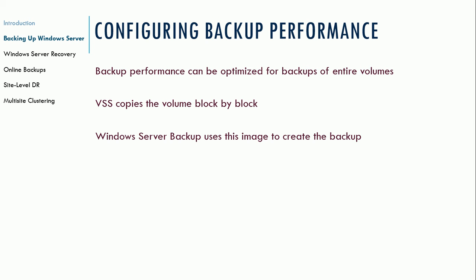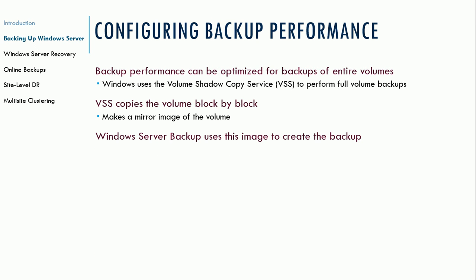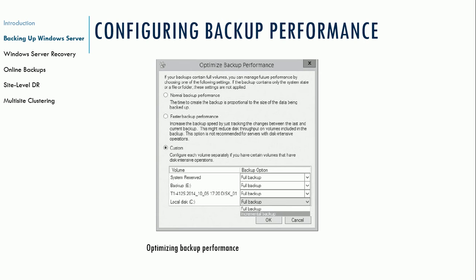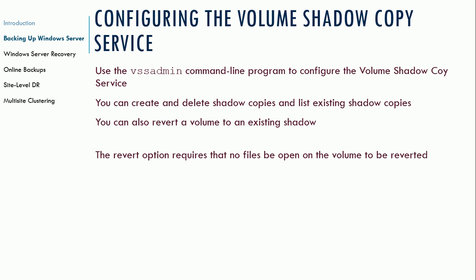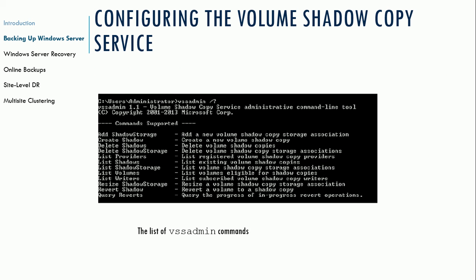Backup performance can be optimized for backups of entire volumes. Windows uses the Volume Shadow Copy Service (VSS) to perform full volume backups — VSS copies the volume block by block and makes a mirror image. It's a block-level copy as opposed to a file-level copy. Windows Server Backup uses this image to create the backup. You can use the VSS admin command line program to configure the Volume Shadow Copy Service: create and delete shadow copies, list existing shadow copies, and revert a volume to an existing shadow copy, which overwrites the volume with a previously created shadow copy.